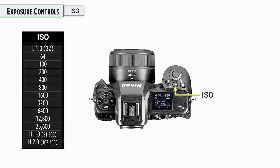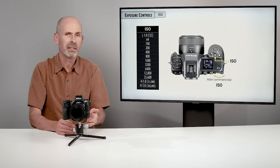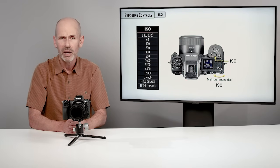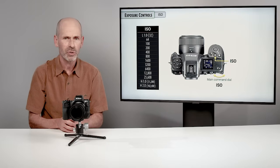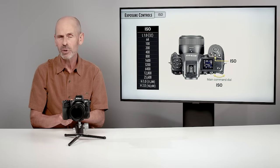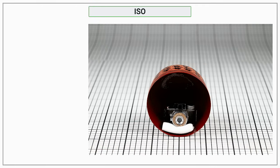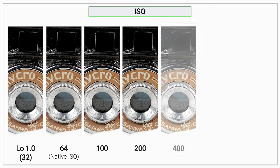Now let's talk about ISO — controlling the sensitivity of the sensor. You'll typically use this in lower light situations, especially when you need a faster shutter speed. The ISO on this camera goes from 32 all the way up to 102,000. ISO 64 is the native ISO — the optimum setting where you'd ideally keep it all the time. You press the ISO button and keep it held while turning the back dial to change the setting.